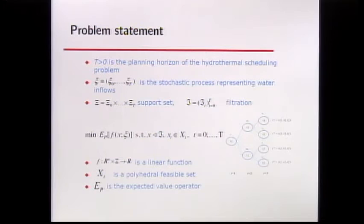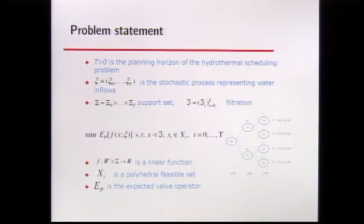The problem statement is as follows. T is the planning horizon, XI represents the stochastic process, and we have a filtration — a sequence of sigma-algebras. When thinking of scenario trees, this filtration represents the structure of the tree. The problem of interest is a minimization of expected cost, where the objective function is linear, the feasible set is polyhedral, and the uncertainty also appears in the feasible set.